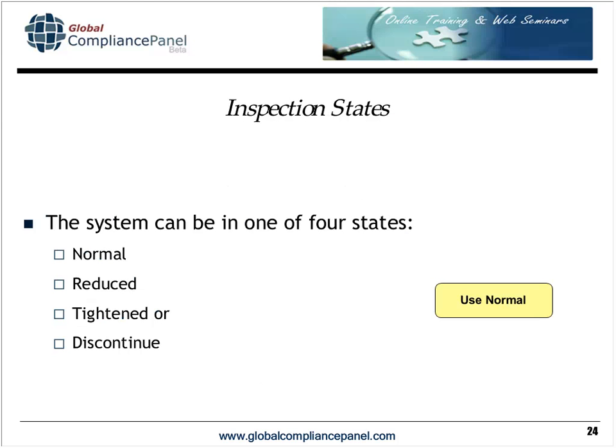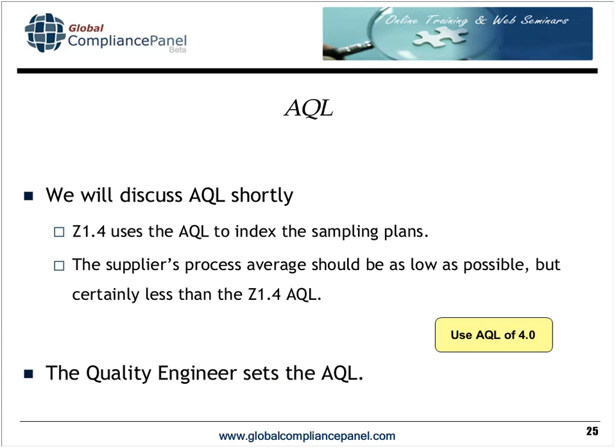The inspection plan can be in four states: normal, reduced, tightened, and a fourth state — discontinue inspection — where the lot history shows quality is so poor that you're not getting an adequate level of assurance and the risk is too high. It will normally switch between normal, reduced, or tightened. We also need something called an AQL — the acceptable quality level — which the quality engineer sets.